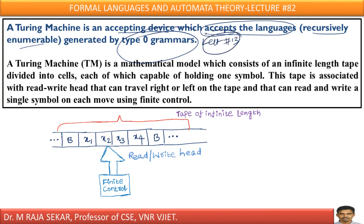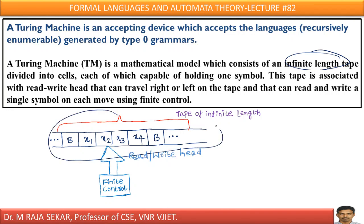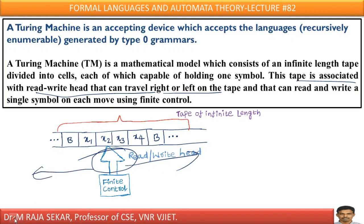A Turing machine is a mathematical model which consists of infinite length tape. Just see, this is the tape whose length is tape of infinite length. Therefore, I can say Turing machine is a machine which consists of infinite length tape, divided into cells. This is one cell, another cell, it is divided into cells. Each of which is capable of holding one symbol. X4 is a symbol, X3 is a symbol, X2 is a symbol, means each cell can consist of one symbol. This tape is associated with read-write head. This particular head is known as read-write head, which can travel right or left. This can be moved right side, even this can be moved on left side.